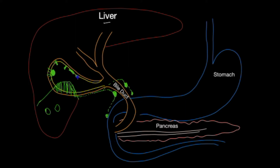So what is a gallbladder polyp? A polyp is a tiny growth in the lining of the gallbladder, as shown here. The great majority are benign and there are two main varieties: they are either flat, called sessile polyps, or they may have a stalk, called pedunculated polyps. A tiny minority may become malignant.